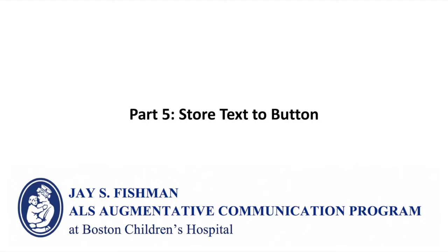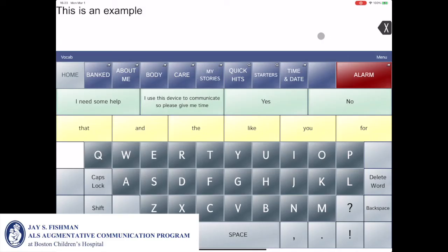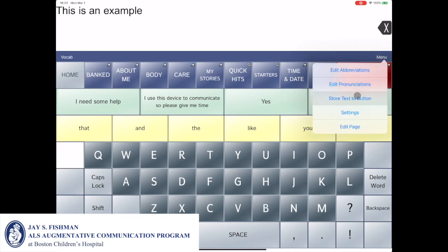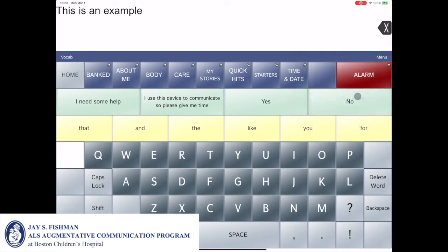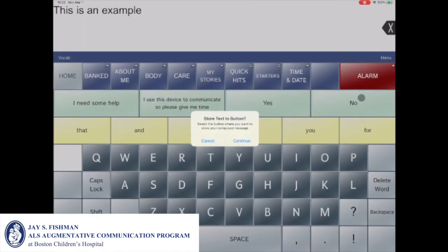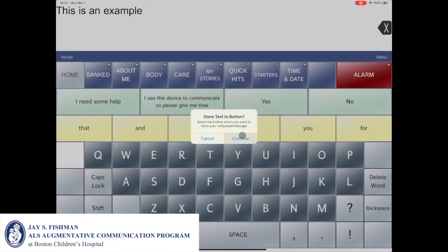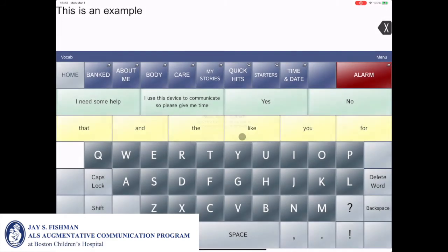The video will now review the store text to button function. This function is helpful when you have content in the message window that you want to save to the current page set. To activate it, go to menu and then select store text to button. When the popup window appears, it provides instructions. Once you finish reading them, click continue, then select the button you want the text to be assigned to.